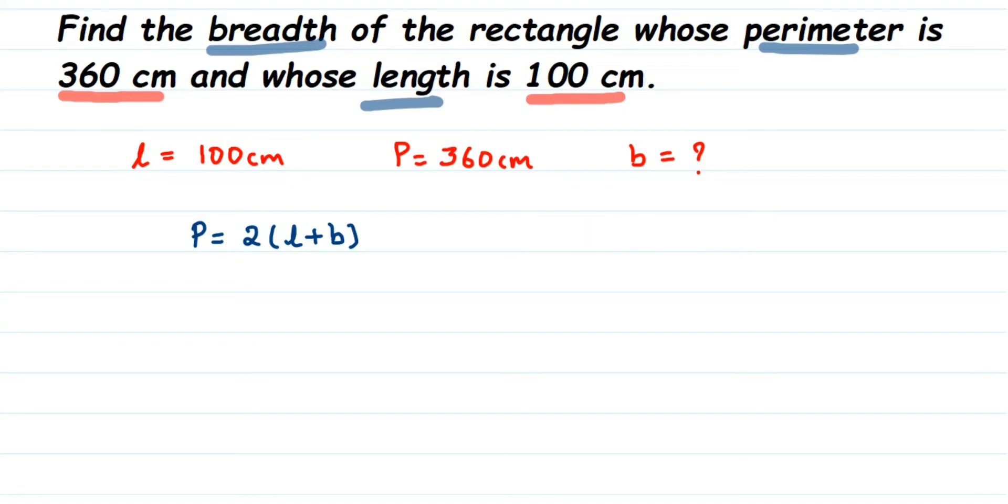Now, substitute the values here. We know P value, P is equal to 360 cm. Write down 360 here. I am going to write down units at the end. I am going to just write down the numbers here. And it is 2 into we have length. Length is 100 plus breadth we do not know, so I am going to write down b here.